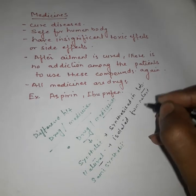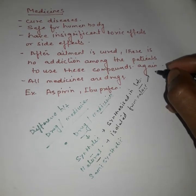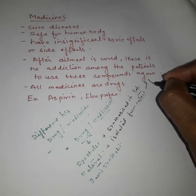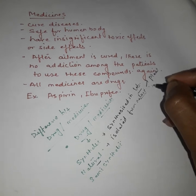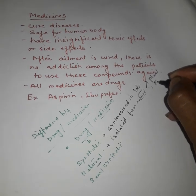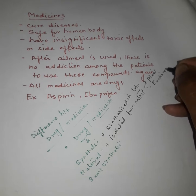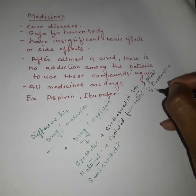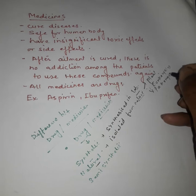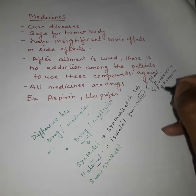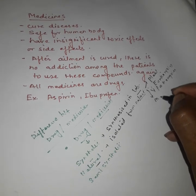In nature there are several sources: they may be from plant sources, eukaryotes, prokaryotes, or they may come from marine sources.